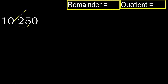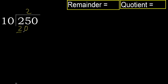But not greater. 10 multiplied by 3 is 30 — 30 is greater. 10 multiplied by 2 is 20 — 20 is not greater. Subtract: 25 minus 20 is 5. Next.